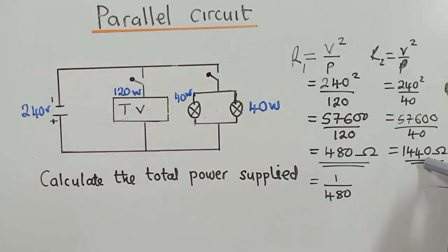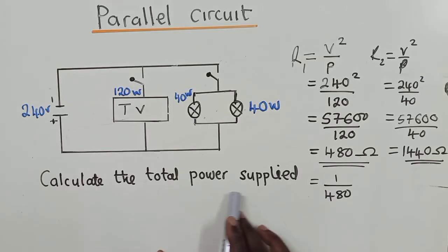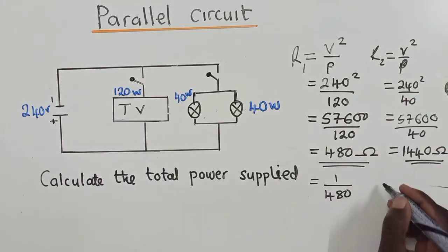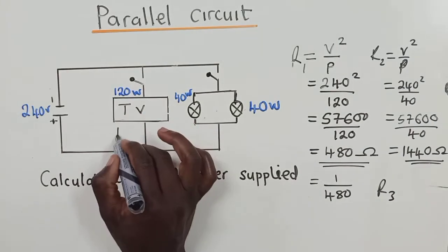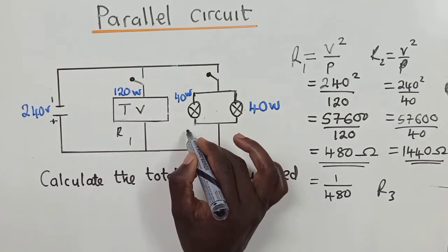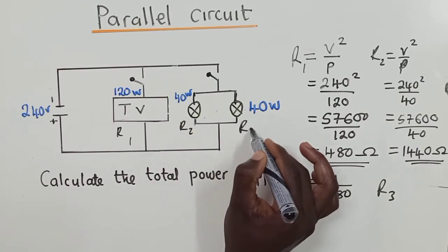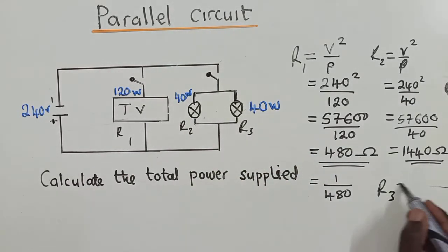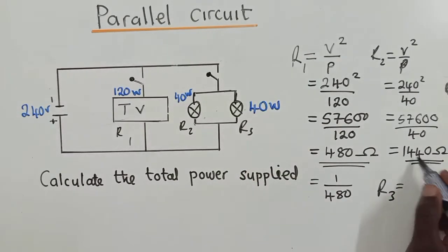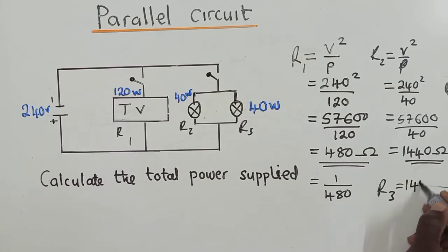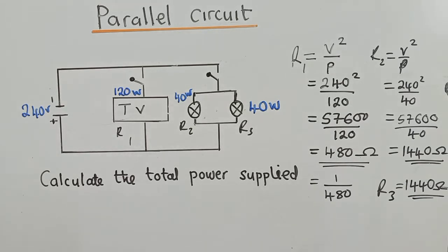R3 is the same as R2 since the power is the same. So we have R1, R2, and R3. R3 will just be the same as R2, which is 1,440 ohms. Now we can move on to calculate the total power supplied.